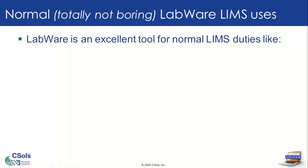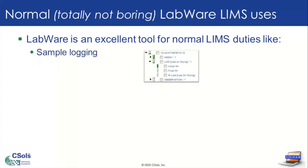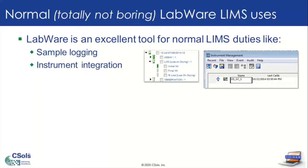So what can Labware do that is pretty normal and seen in a lot of systems? One thing is sample logging. LIMS is great at keeping track of samples — you keep track of their tests and results, everything from production samples to environmental monitoring. Tests have pre-configured analyses that provide a consistent way to enter and store data. Of course, there's instrument integration, which is a staple in a lot of LIMS. You can import results directly from instruments or software-linked instruments like Empower, for example. Instrument importing can save a ton of time, especially if you're a high-volume lab.